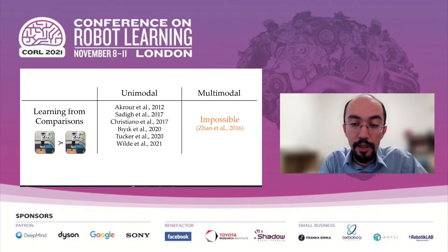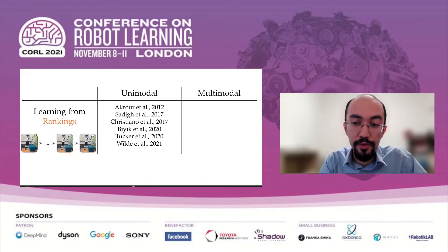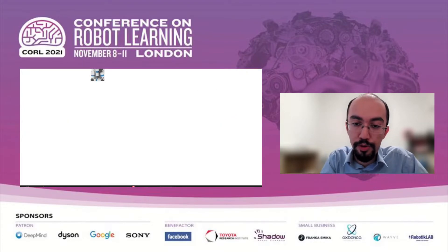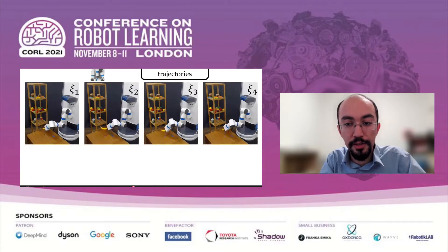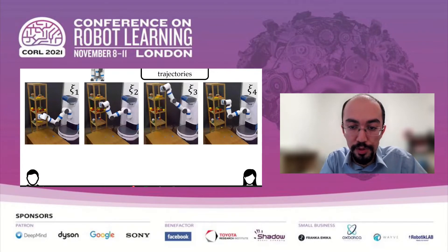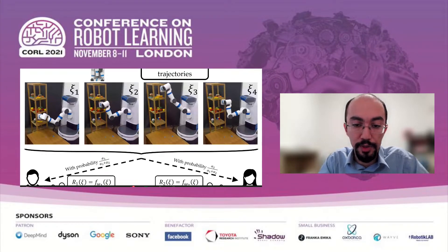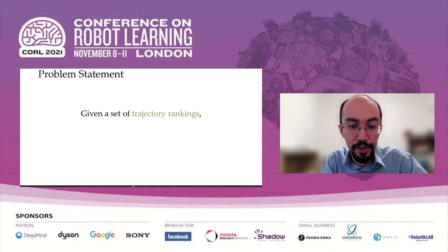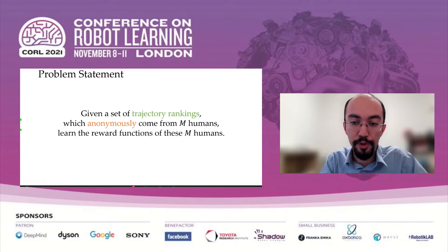So are we done? No, because we can think of some generalizations of the problem. Specifically, instead of learning from pairwise comparisons, we will learn from rankings of multiple trajectories. So in this work, we are solving the problem of learning multimodal rewards using rankings. The robot is going to show multiple trajectories to the users and ask them to rank these trajectories from best to worst. We will have multiple users, each with their own reward function parametrized by some omega. The ranking query will be answered by one of these users with some unknown probability parametrized by alpha, and the robot will not know who responded to the query. We are given a set of trajectory rankings from m humans who may or may not have different preferences, and we want to learn the reward functions of these m humans.